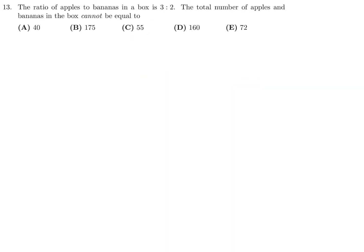The ratio of apples to bananas in a box is 3 to 2. The total number of apples and bananas in the box cannot be equal to what? That means I can say the number of apples is 3x and the number of bananas is 2x. The ratio would still be 3 to 2. The number of apples plus the number of bananas would be 3x plus 2x, which equals 5x. Obviously, a plus b is some multiple of 5. Well, all of these are multiples of 5, except this one. So it cannot be equal to that. Number 13, the answer is E.